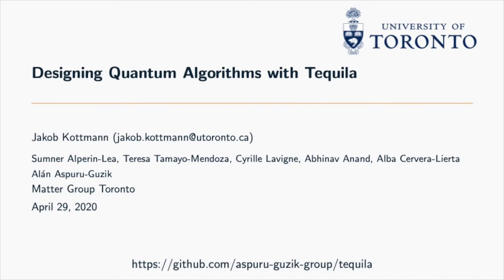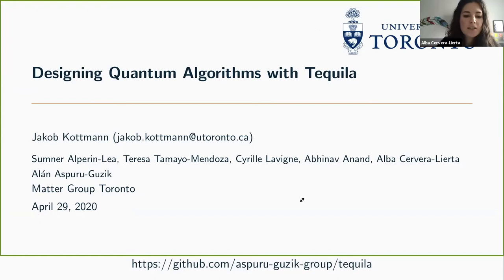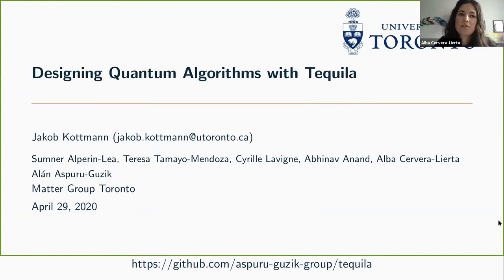It's a pleasure to introduce Jakob Kotman from MATERLAG Group at the University of Toronto. He took his doctoral studies in numerical quantum chemistry at Humboldt University of Berlin. His work focused on adaptive representation of correlated wave functions using multiresolution analysis. Afterwards, he joined the Alan Aspuru-Guzik group in Toronto, and he's currently working on quantum algorithms for quantum chemistry and quantum optics. So Jakob, welcome, and the virtual floor is yours.